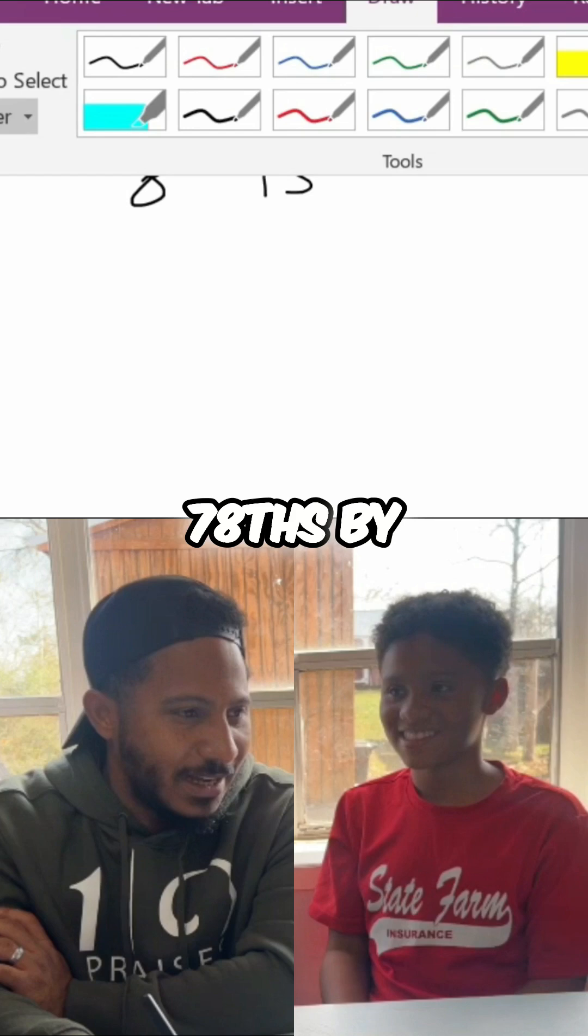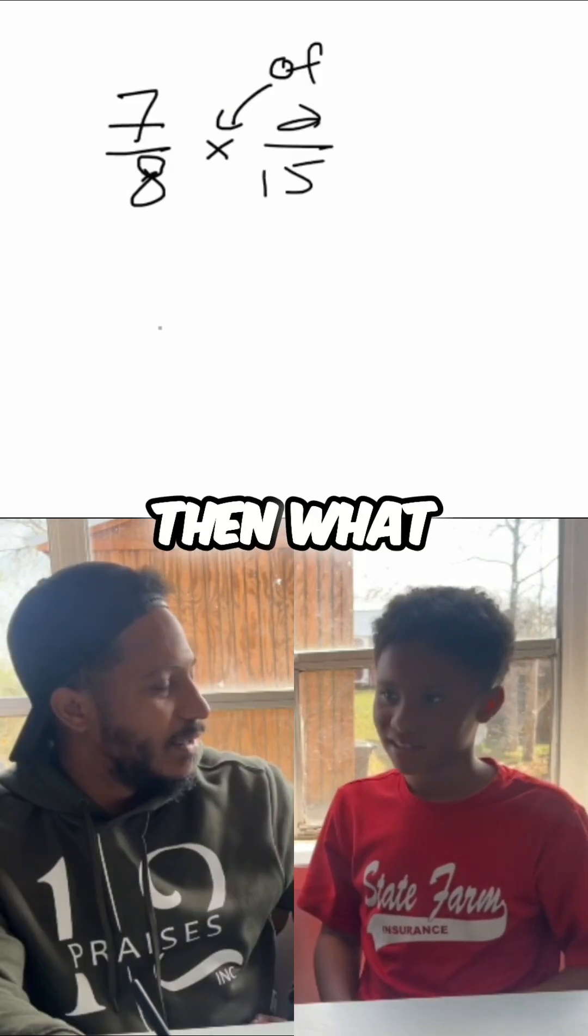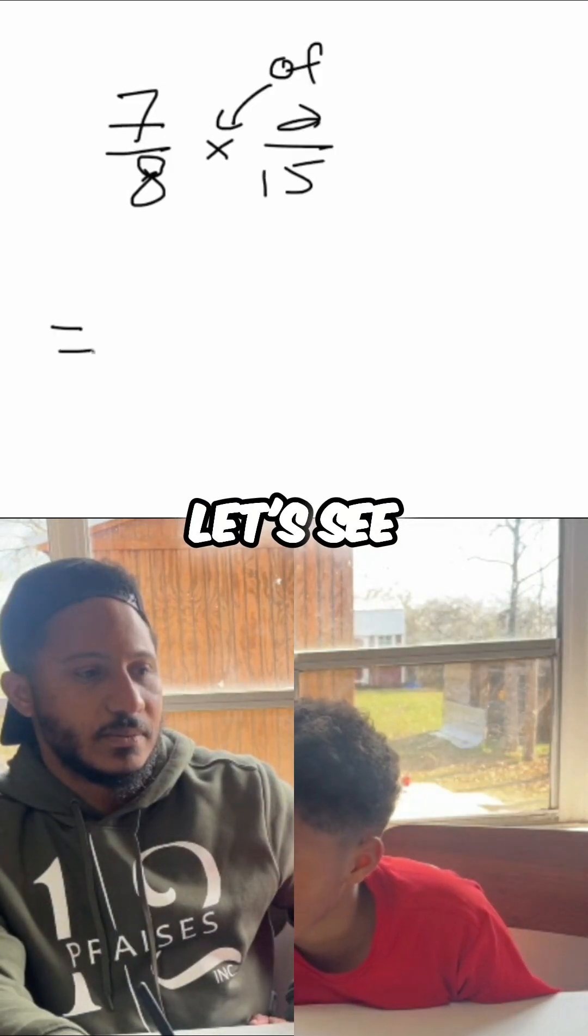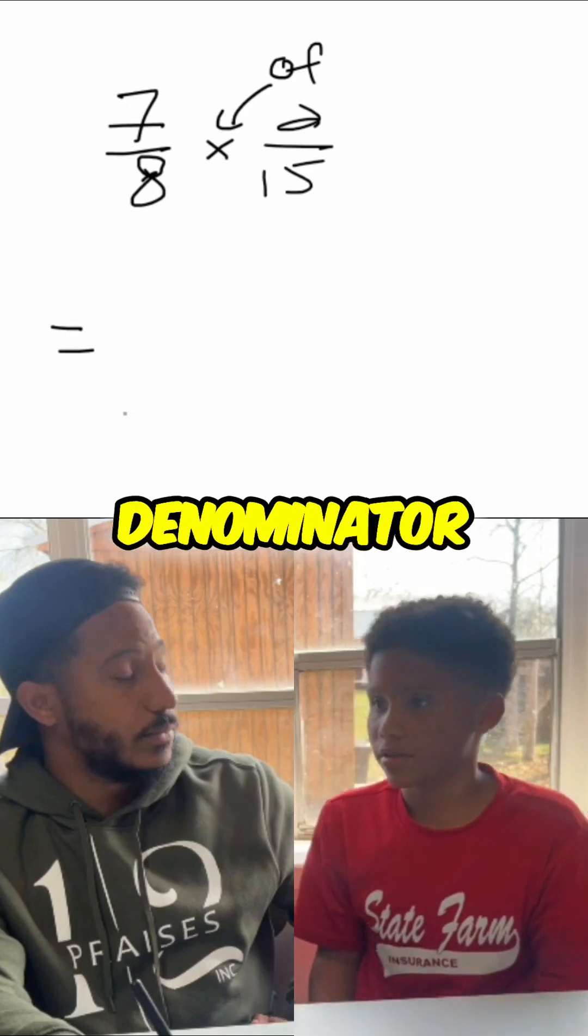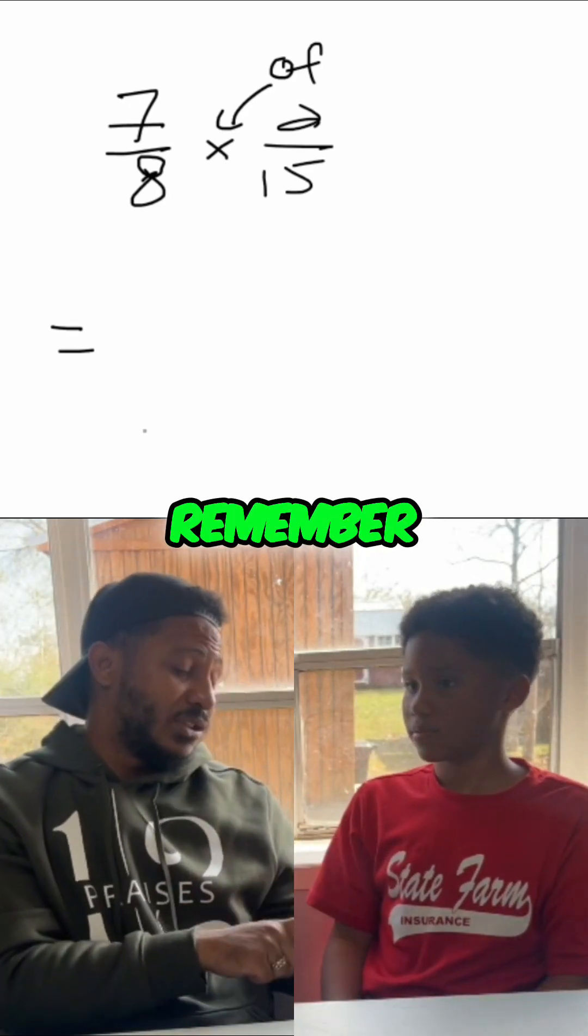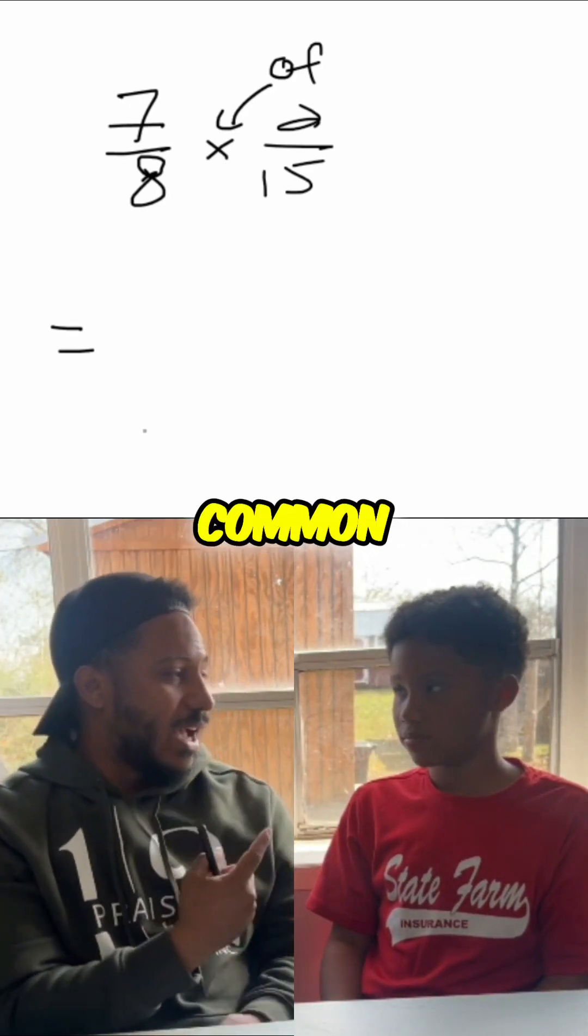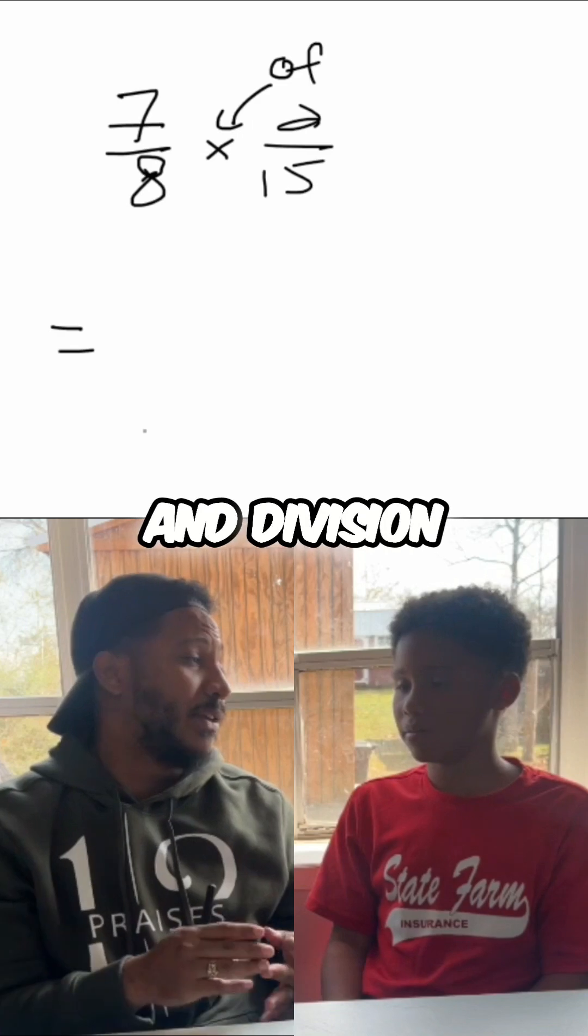Okay, seven-eighths by two-fifteenths. All right, then what? So, let's see. Let's define the common denominator. Okay, remember, with addition and subtraction, common denominator. But multiplying and division. I mean multiplying.